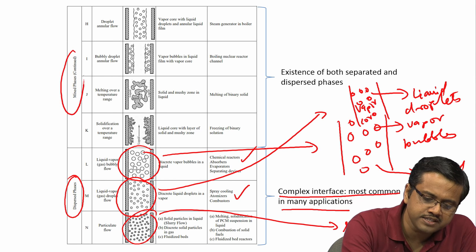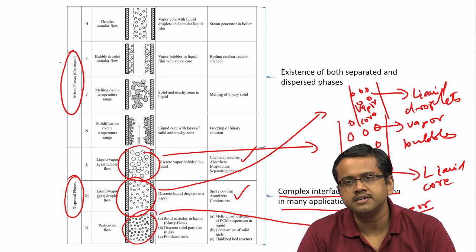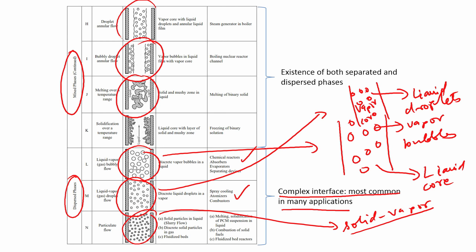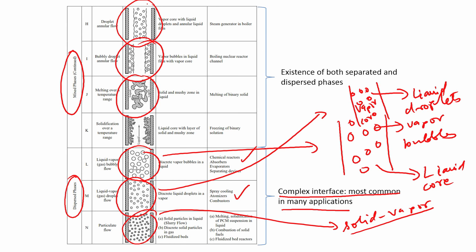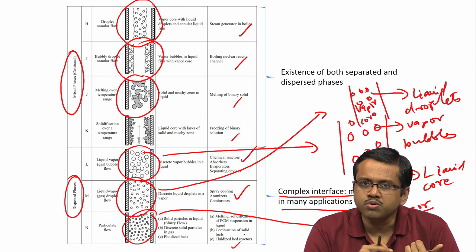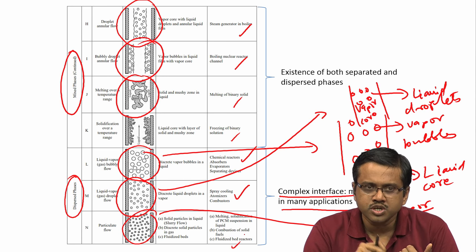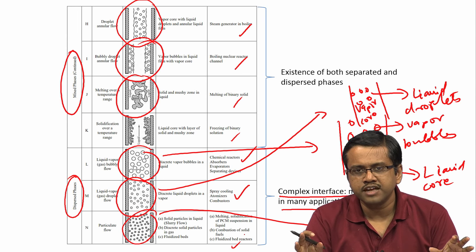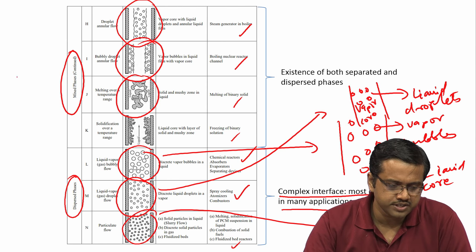On one end of the spectrum you have the separated phase — nice, easy problems to solve with a well-defined interface. On the other end you have the dispersed phase — very complicated, where one phase is dispersed in another. In between you have the mixed phase, which has characteristics of both. Almost all the real systems in the world — from gas turbines to spray cooling to thermal storage — are multiphase applications involving liquid-vapour-solid interfaces in some form.